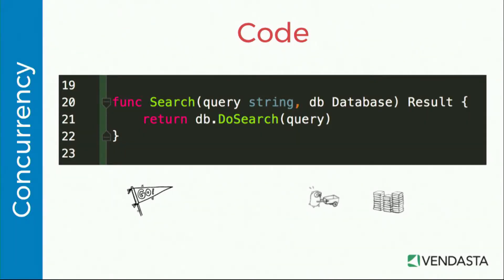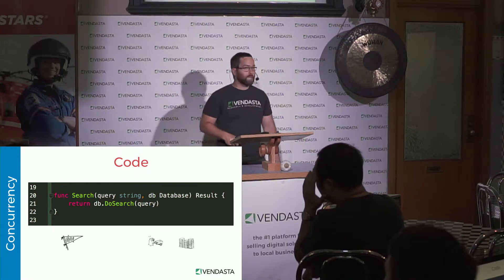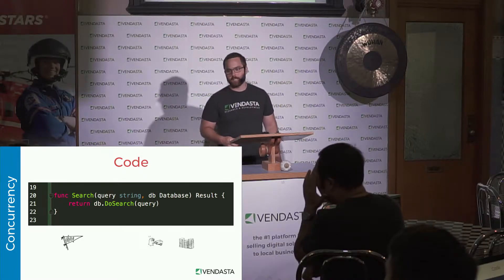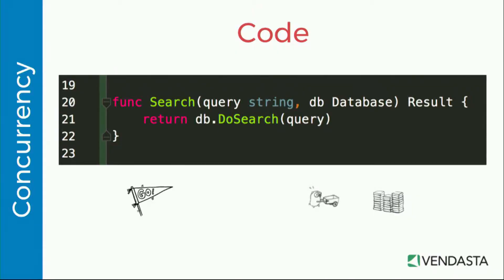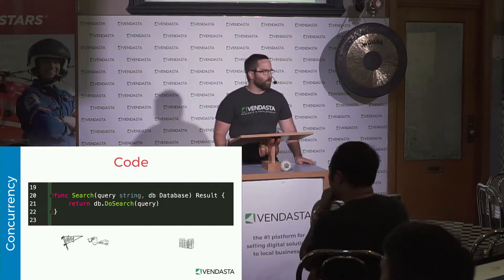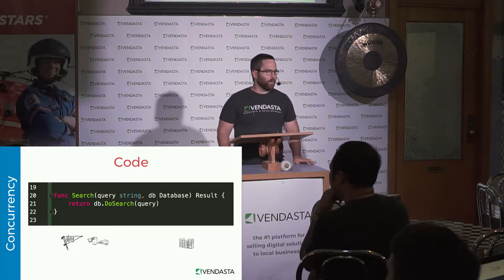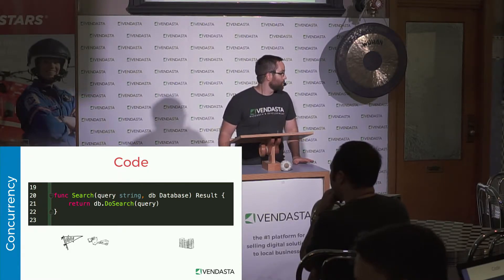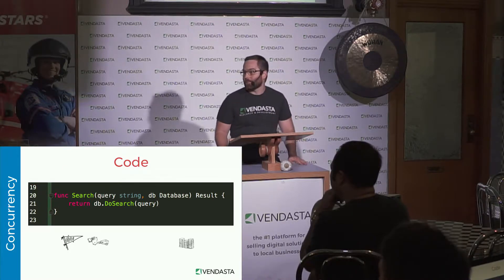Let's get into some code. Here we have a function that does a search — it takes a query string, takes a database, and returns a result. The function takes the database you pass in, runs the doSearch method on that database, and returns the result. Conceptually, it's like a gopher with a cart running over to a pile of books, sifting through them, loading his cart with the applicable books, and bringing them back. The problem with this is it's slow — a lot of requests will take too long for users.